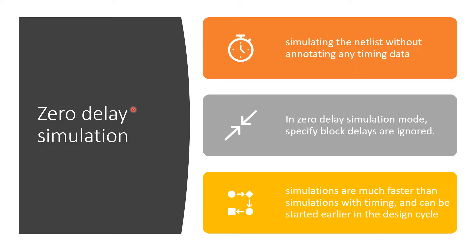The first type of gate level simulation is zero delay simulation. Zero delay simulation means simulating the netlist without annotating any timing data. It is mainly meant for checking and validating the functionality of the design once it is translated into a gate level netlist. In zero delay simulation, the specified block delays are ignored. These simulations are much faster than simulation with timing and can be started early in your design cycle when the netlist is not yet frozen or timing information is not yet available.